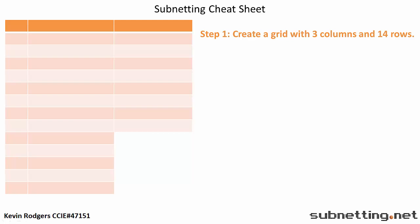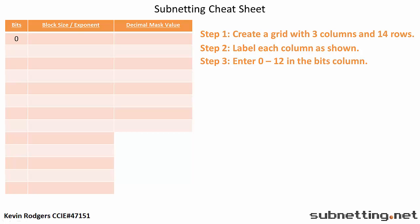The first step is to create a grid with 3 columns and 14 rows. Then label the columns Bits, Block Size Slash Exponent, and Decimal Mask Value.